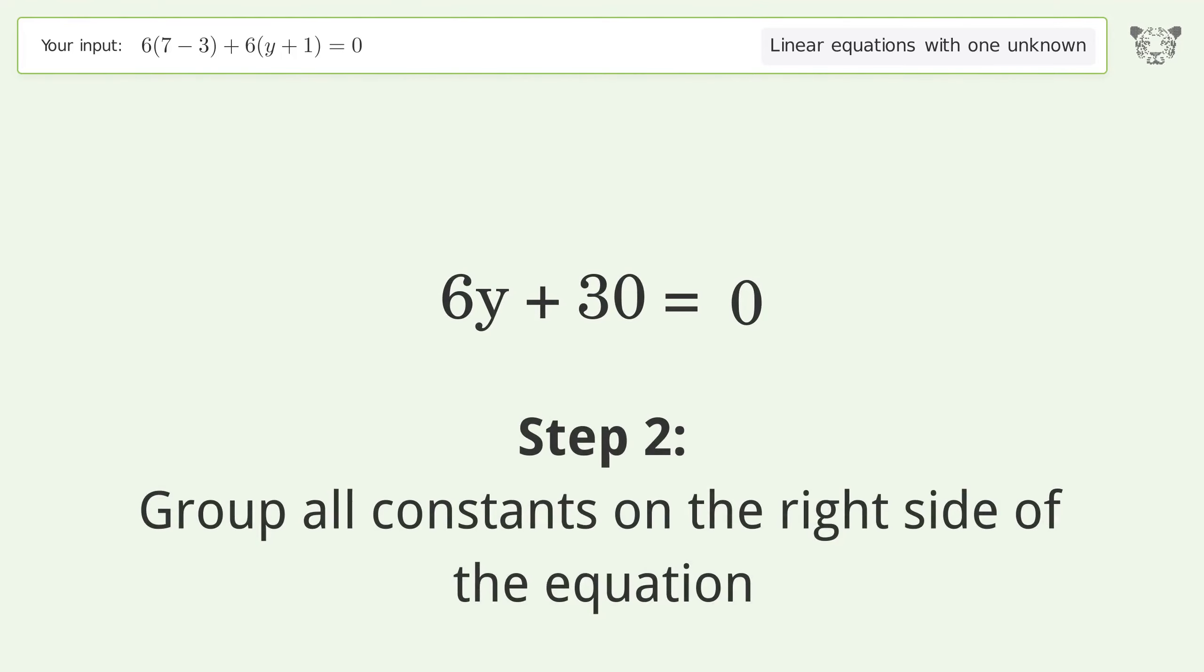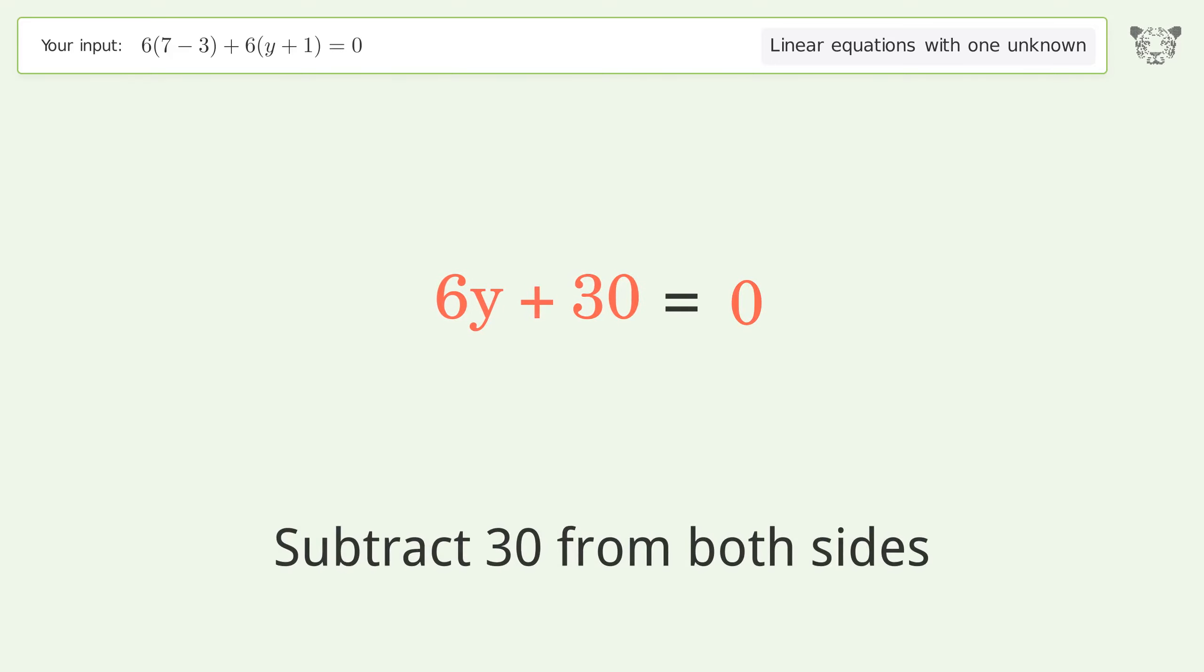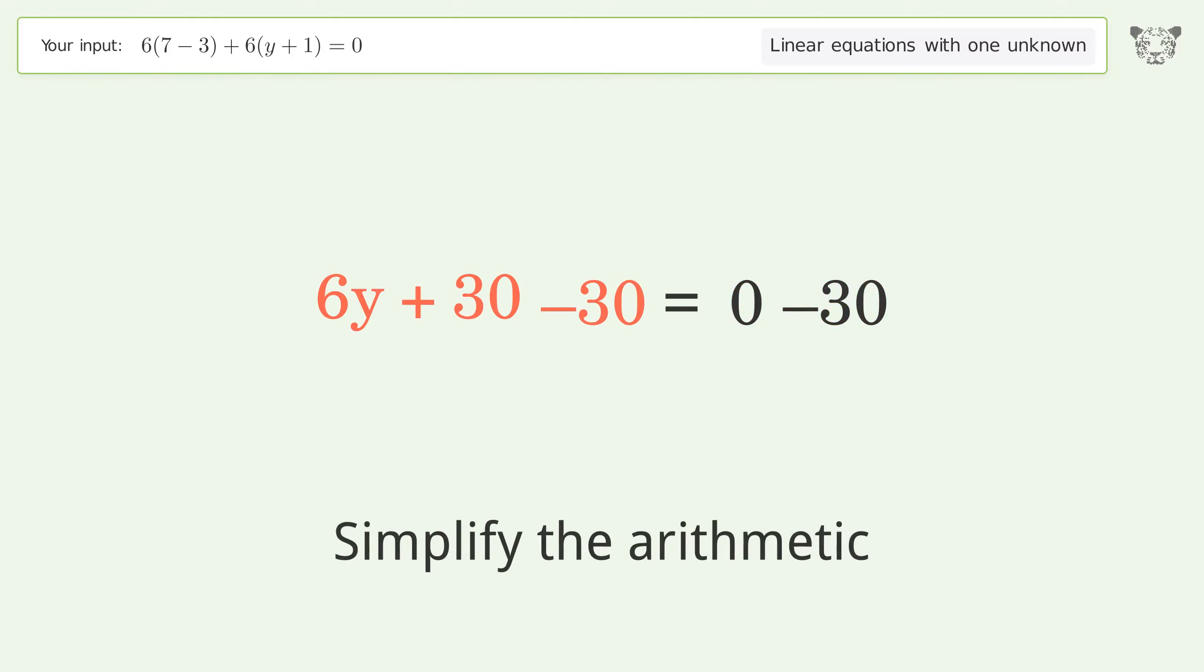Group all constants on the right side of the equation. Subtract 30 from both sides. Simplify the arithmetic.